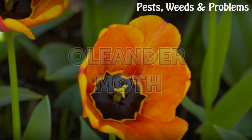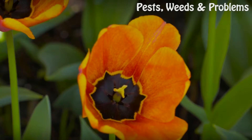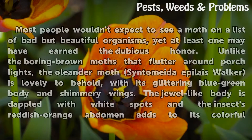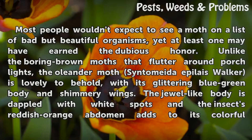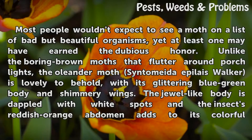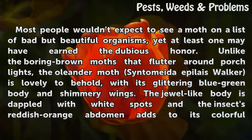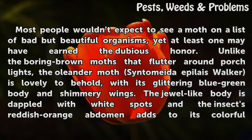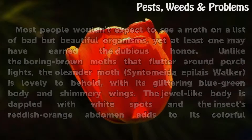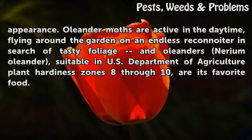Oleander Moth. Most people wouldn't expect to see a moth on a list of bad but beautiful organisms, yet at least one may have earned the dubious honor. Unlike the boring brown moths that flutter around porch lights, the Oleander Moth Centameta epila Walker is lovely to behold, with its glittering blue-green body and shimmery wings. The jewel-like body is dappled with white spots and the insect's reddish-orange abdomen adds to its colorful appearance.